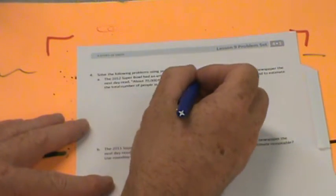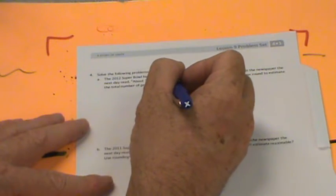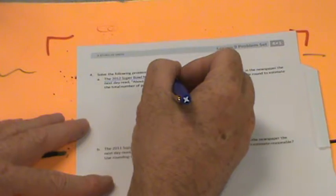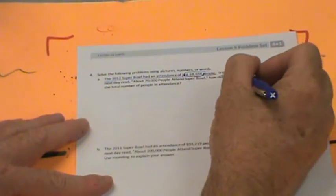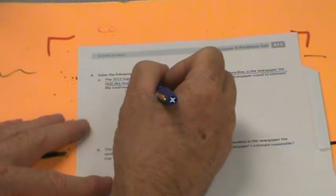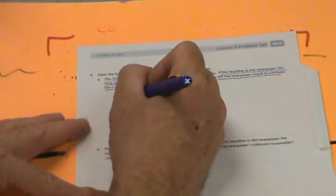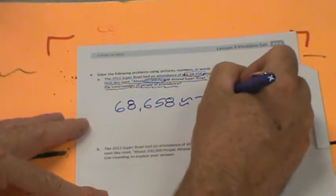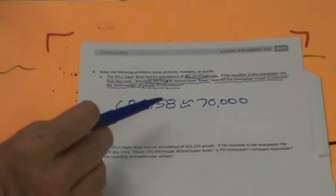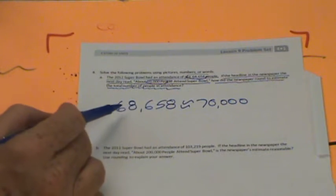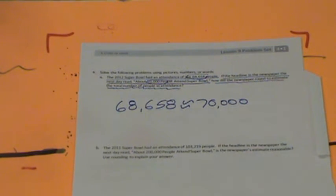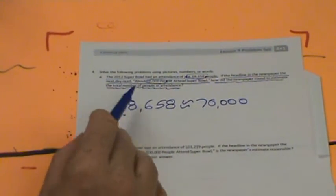We have solved the following problems using pictures, numbers, or words. The 2012 Super Bowl had an attendance of just 68,658 people. If the headline in the newspaper the next day read about 70,000 people attended the Super Bowl, how did the newspaper round to estimate the total number of people in attendance? Let's write down the number 68,658 and we're going to round it to 70,000. So what place value did that newspaper use to round? If you said the ten thousands, you're absolutely right. Because 68 is closer to 70 than it is to 60.